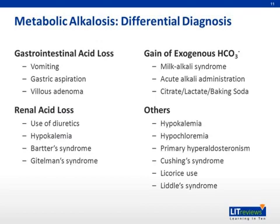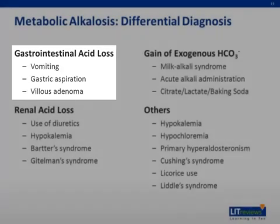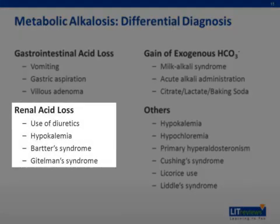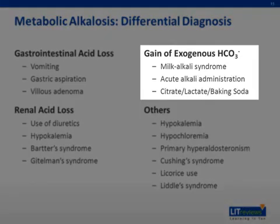The differential diagnosis of metabolic alkalosis includes gastrointestinal acid loss — like vomiting, gastric aspiration, and villous adenoma — renal acid loss, which is commonly seen with the use of diuretics, hypokalemia, and certain genetic abnormalities of renal tubular transporters, like Bartter and Gitelman's syndrome. Metabolic alkalosis could also be due to gain of exogenous bases, for example, seen in patients who abuse antacids, also known as milk-alkali syndrome.